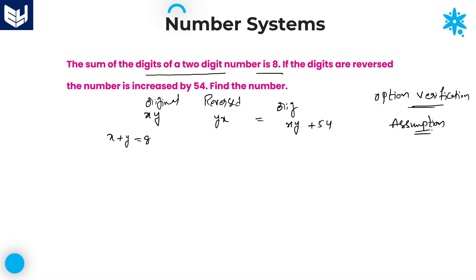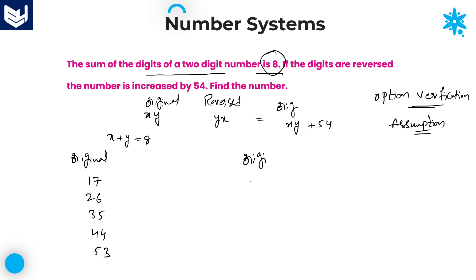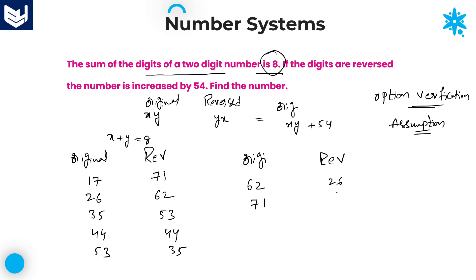The sum of digits is 8, so possible original numbers are: 17, 26, 35, 44, 53, 62, 71. Their reverse numbers are: 71, 62, 53, 44, 35, 26, 17 respectively. Now check the condition: the number must be increased after reversing. Where the number decreases or stays equal, eliminate those options. 44 stays equal — eliminate. 53 becomes 35 — decreases — eliminate. 62 becomes 26 — decreases — eliminate. 71 becomes 17 — decreases — eliminate.